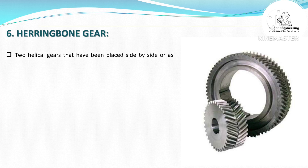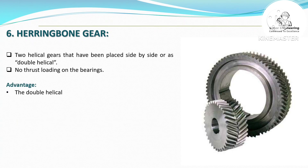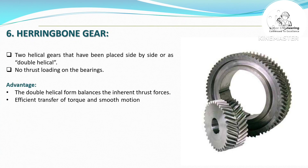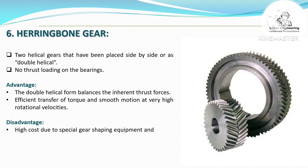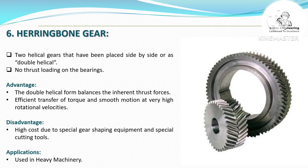Herringbone Gear — two helical gears placed side by side, also known as double helical, with no thrust loading on the bearings. Advantage: the double helical form balances inherent thrust forces, enabling efficient transfer of torque and smooth motion at very high rotational velocities. Disadvantage: high cost due to special gear shaping equipment and cutting tools. Applications include heavy machinery.